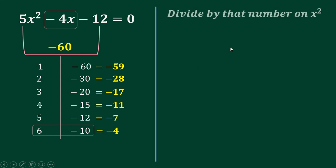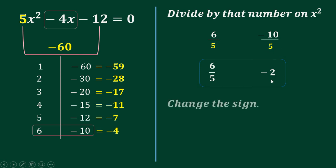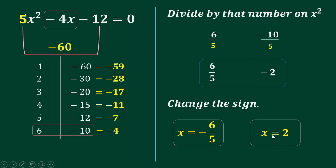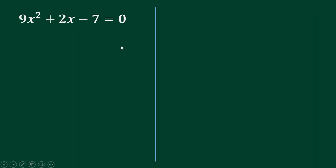Then you divide these numbers by the leading coefficient: 6 and negative 10 divided by 5. Reduce: 6 over 5, and negative 10 divided by 5 is negative 2. Then you change the sign — positive to negative, and negative to positive. So x equals negative 6 over 5, and x equals positive 2. These are the roots of this quadratic equation.